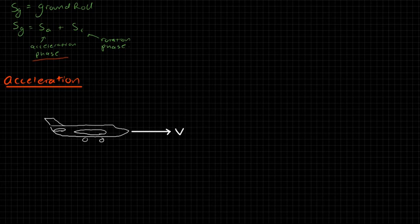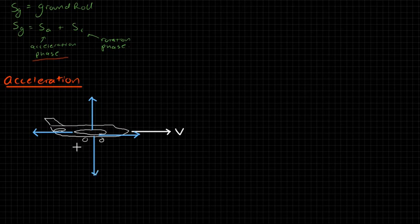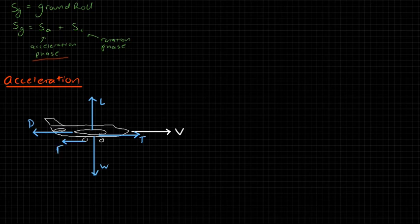The forces acting on the airplane are: thrust — assuming the thrust angle is zero, aligned in the direction of travel; lift — acting straight up perpendicular to velocity; drag — acting straight back parallel to velocity; weight — acting straight down; and rolling friction force, F sub r, acting opposite to the direction of motion.